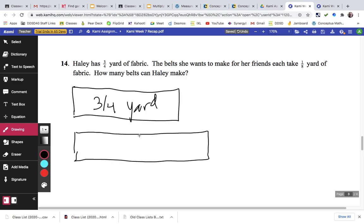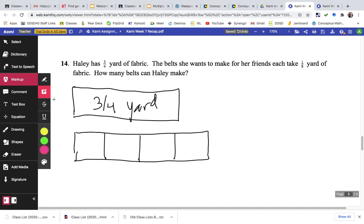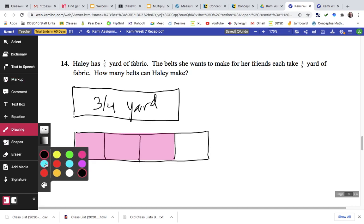So I drew this picture of a yard of fabric, split it into fourths, took my highlighter and really showed that fabric that she had and chose the color. She's got pink fabric. Then the belts that she wants to make are 1/8 of a yard.